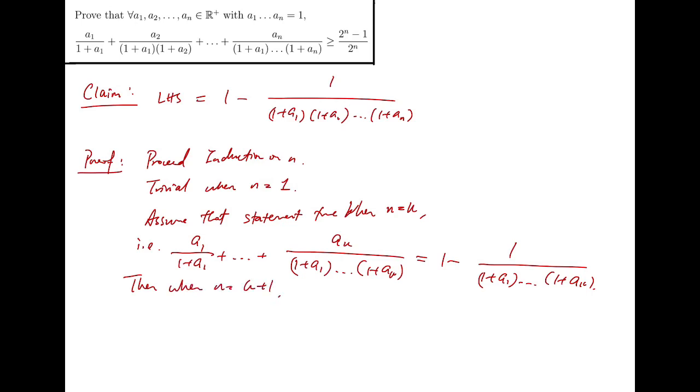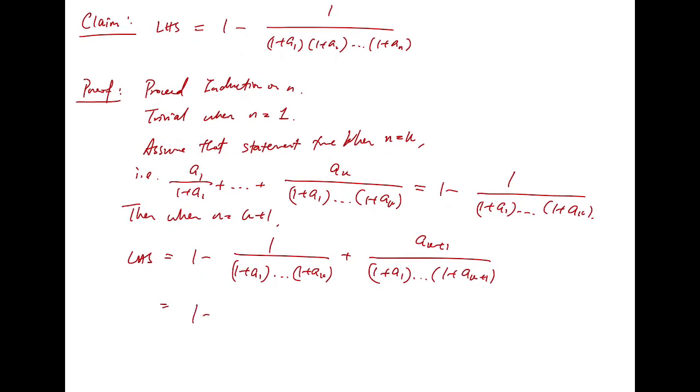Then, for the inductive step, we can change the first k terms into this. And then, we add the final term. Then, again, using the same trick, by combining two fractions, just like what we did when we tried to find an observation when n is equal to 2 or n equals to 3. Again, we arrive at the same result.